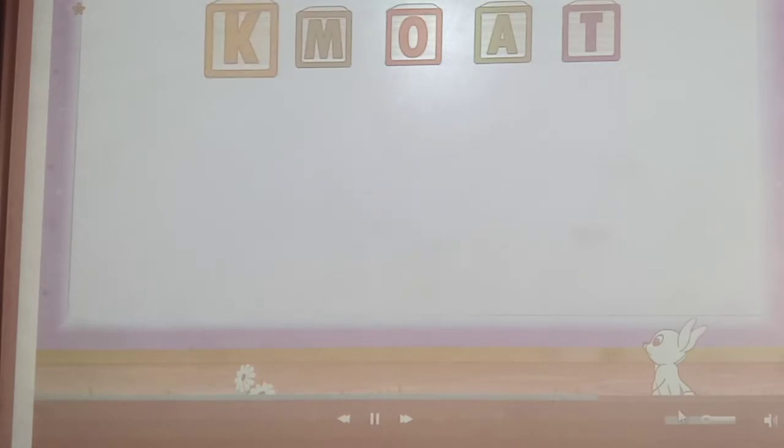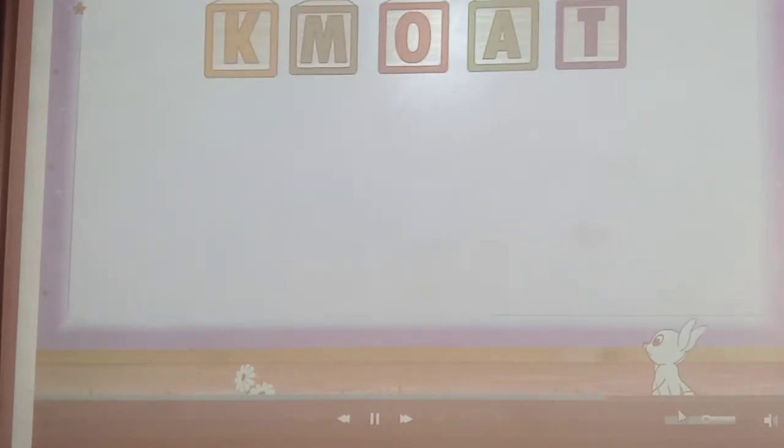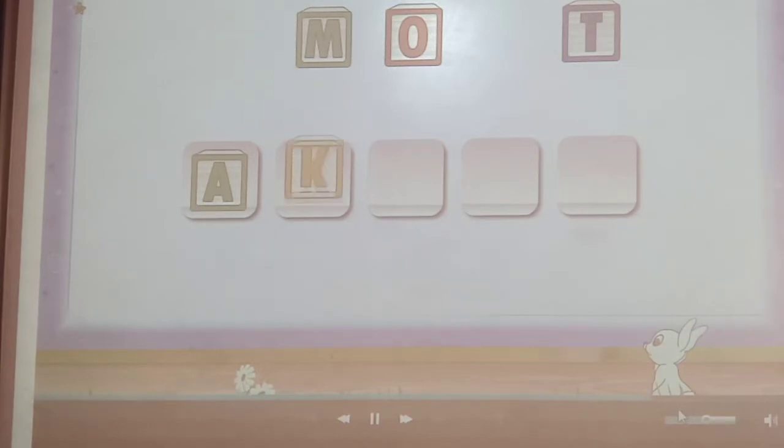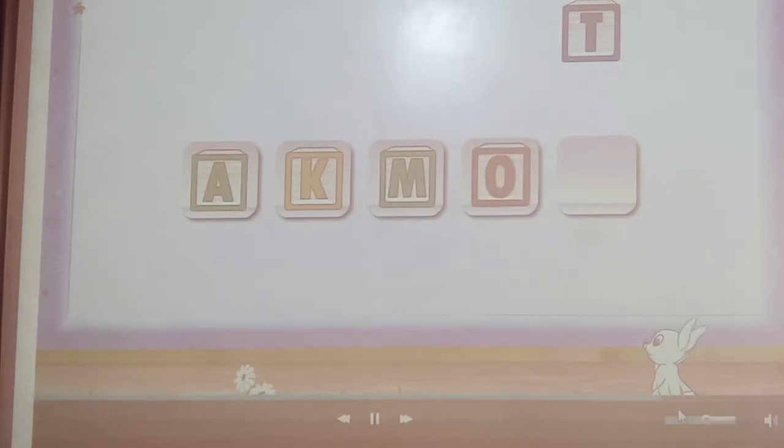Now, look at this carefully. What can you see? There are letters, but not in the alphabetical order. The first letter in the first set is A, then K. M is next. O comes after M. And the last is T.